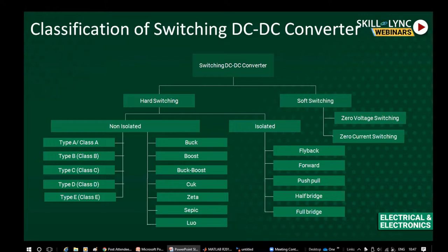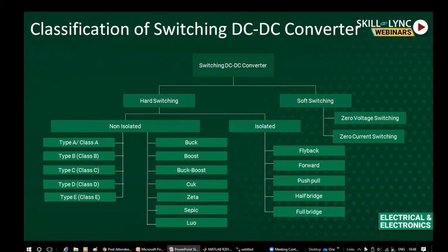To reduce those losses, we switch the devices either at zero voltage or at zero current — this is nothing but soft switching. In soft switching converters, we use resonant components L and C, designed such that the switch can be turned on at zero voltage or turned off at zero voltage or zero current. During turn-on and turn-off, the device voltage or current can be zero. In hard switching converters, no resonant components are used during turn-on and turn-off.